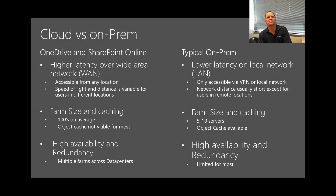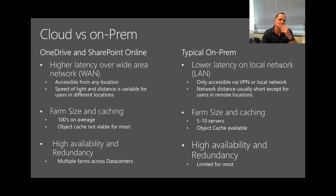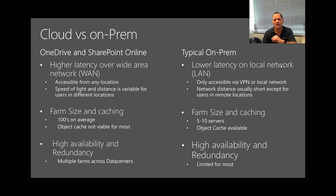If we look at cloud versus on-prem, in a typical on-prem environment you have lower latency — you're on your local area network. It's also typically only available via VPN, though some customers do have scenarios where they make it available publicly. Typically it's available via VPN if you're not in the office, or via local network if you're in the office, and the network distance is usually short except for remote users. In today's world, a lot of users work remotely across different geographies, and this is where cloud comes in strongly.